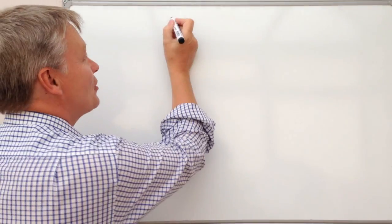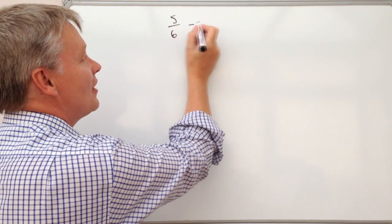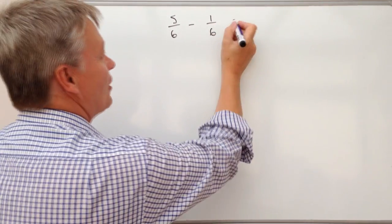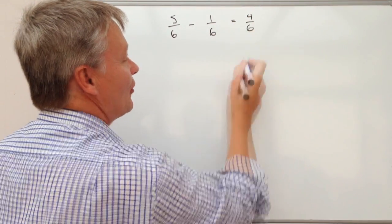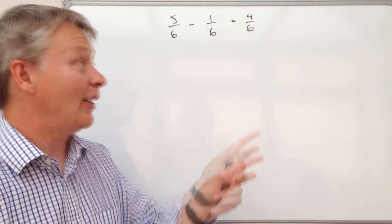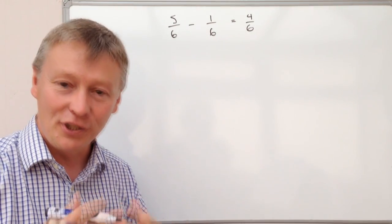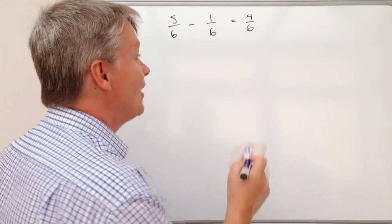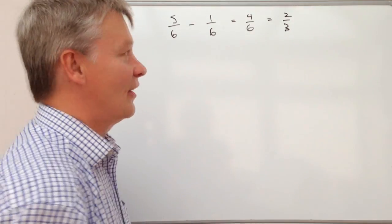So it's fairly straightforward. If you get a question which is something like 5/6 take away 1/6, the denominators are the same, so that's going to be equal to 4/6. And one of the things about fractions is you need to make sure you reduce. So I'm going to divide the top and the bottom by 2, so I reduce that to 2/3.